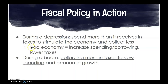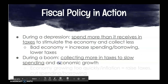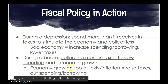On the other hand, during a boom when inflation is risky, we will collect more in taxes to slow spending and economic growth. If the economy is growing too quickly, we will raise taxes — because if taxes are higher, the consumer has less money to spend. The government will also cut spending and cut borrowing. This is an example of contractionary fiscal policy.